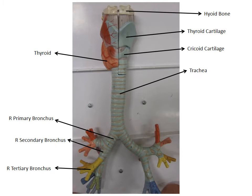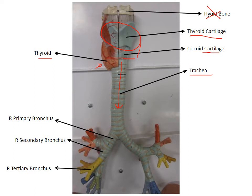This diagram points out the thyroid and the cricoid cartilage. You don't have to know the thyroid gland here — we will talk about it in the endocrine system. You don't have to know that this is the hyoid bone. What I do want you to know is at the bottom of the area we call the larynx starts a tube called the trachea. The trachea is the scientific name for the windpipe — I will not take 'windpipe' as an answer.